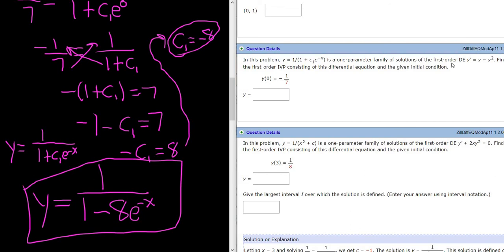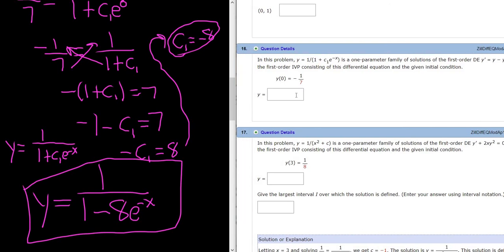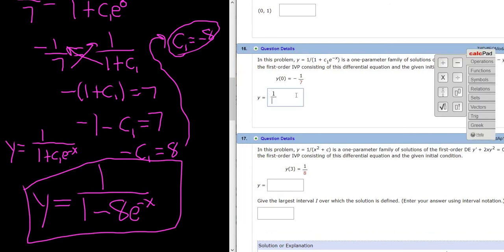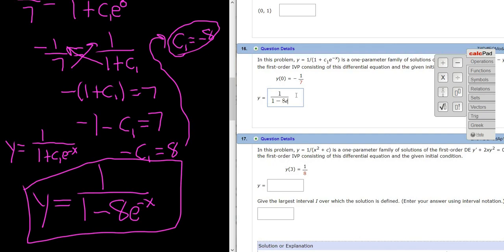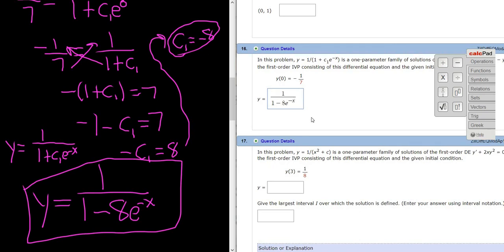If you solve this, you will get this general solution. Then you use this initial condition to pick a particular solution from this infinite family. So in the box, you would type in 1 over (1 minus 8 e to the negative x). And that's it. I hope this video has been helpful.